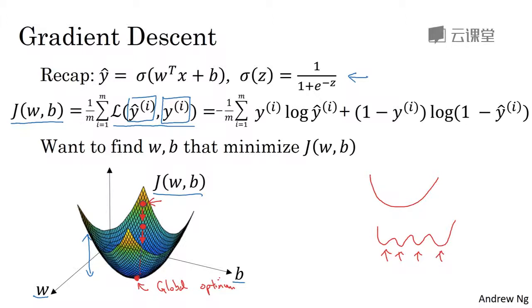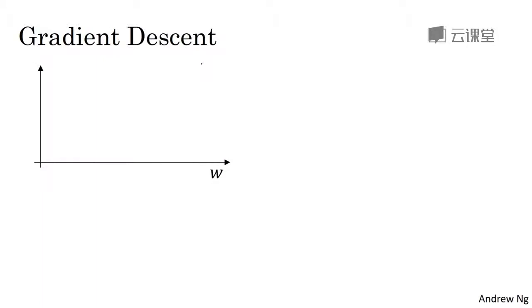Let's write out a bit more of the details. For the purpose of illustration, let's say that there's some function j of w that you want to minimize. And maybe that function looks like this. To make this easier to draw, I'm going to ignore b for now, just to make this a one-dimensional plot instead of a higher dimensional plot. So gradient descent does this.